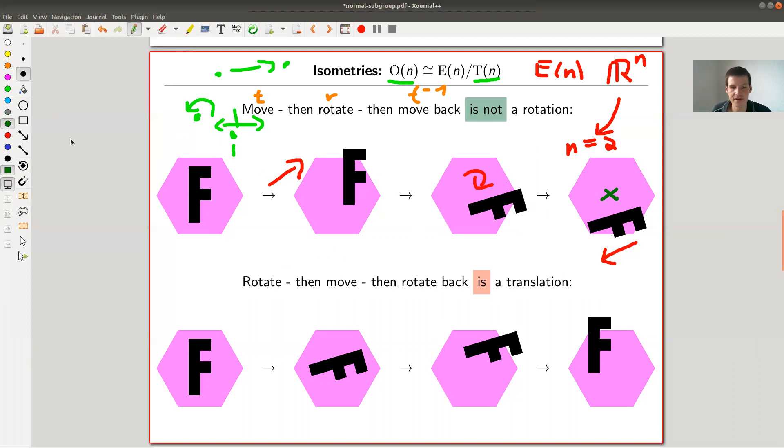Funnily, if you do it the other way around, if you rotate and then move and rotate back, it actually gives you a translation. And this conjugation property is what in the end defines a normal subgroup. So T(n) should be a normal subgroup. Here's a conjugation property. And so this is not T, but this is T prime. This is equal to T prime for some other translation. And this is called conjugation.